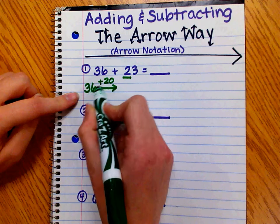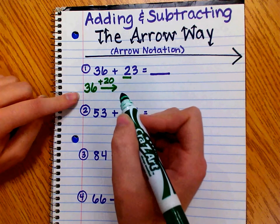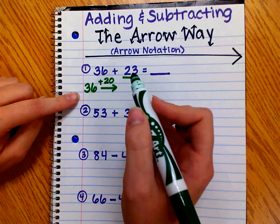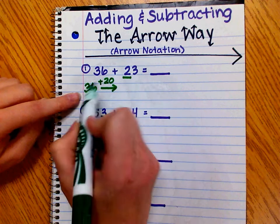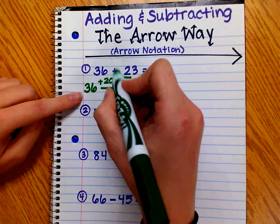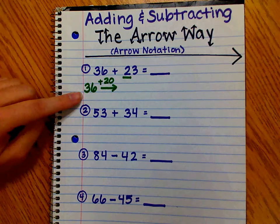I'm first going to solve 36 plus 20. Students can solve this problem two different ways. They can either use their knowledge of place value, such as 3 tens plus 2 tens equals 5 tens, or they can use their hundreds chart.